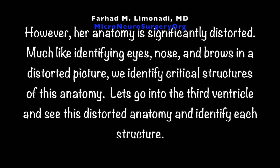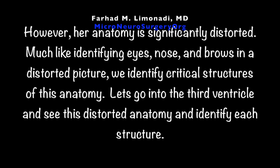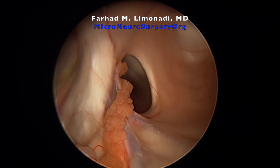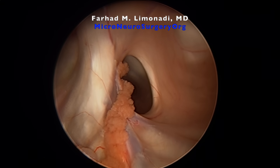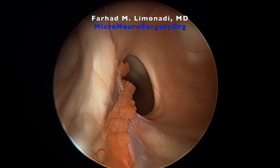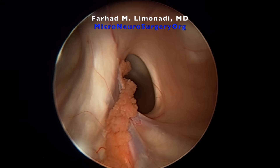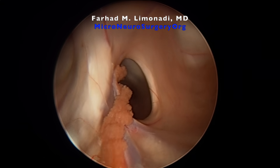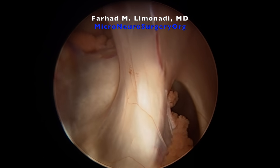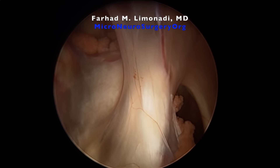This is the view we expect advancing through the foramen of Monro and into the third ventricle. However, her anatomy is significantly distorted. Much like identifying eyes, nose, and brows in a distorted picture, we identify the critical structures of this anatomy. Let's go into the third ventricle and see this distorted anatomy and identify each structure.